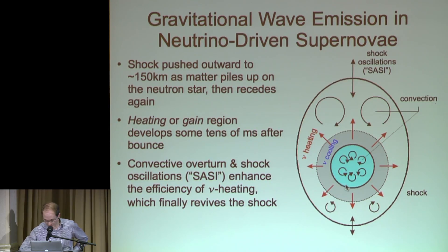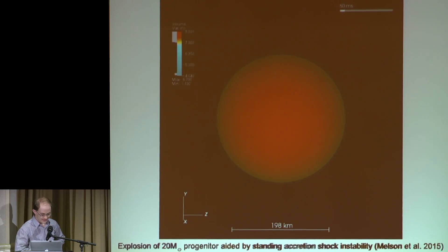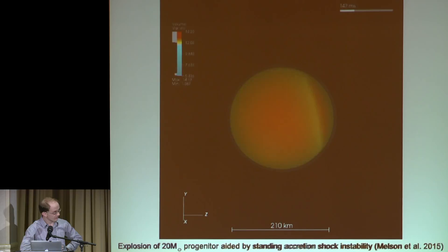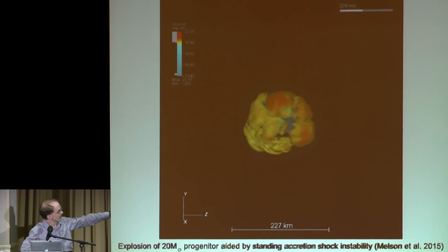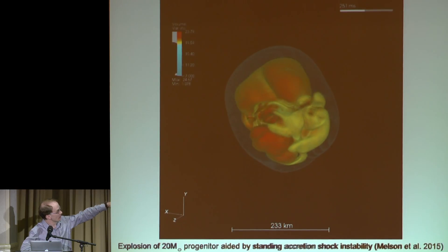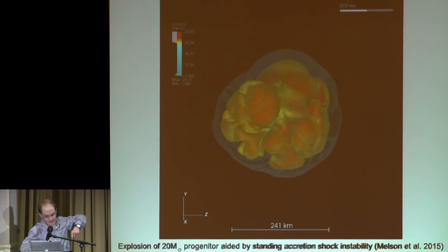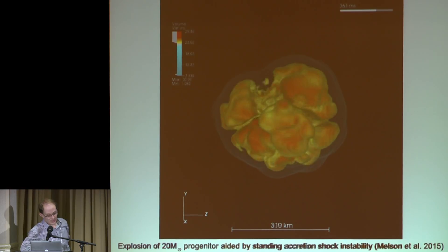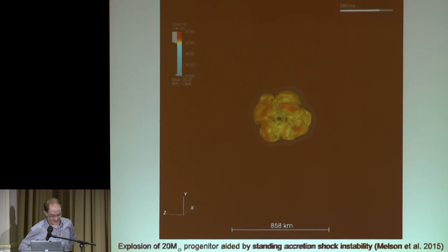In addition, gravitational wave emission can also come from the proto-neutron star interior, which is convective due to surface cooling by neutrinos. To demonstrate that both instabilities actually occur: here's an explosion model self-consistently computed last year by a student at Garching, triggered by global shock oscillations. The standing accretion shock sloshing has become more violent and is driving the shock outwards, and you can see convection developing during the explosion phase. The question now is: what are the signatures in gravitational waves that you actually see from this?